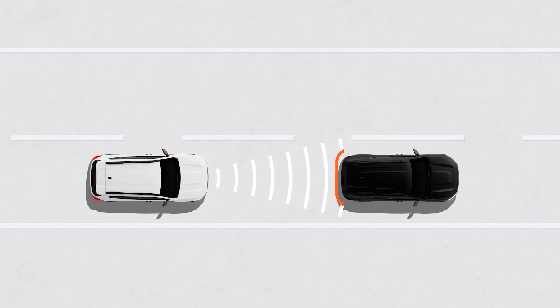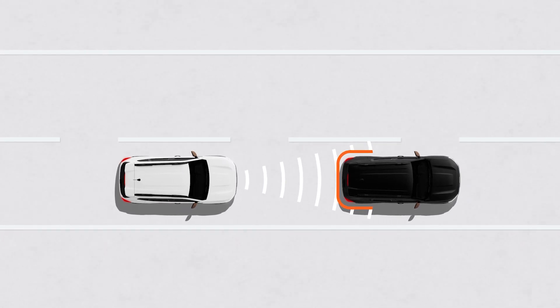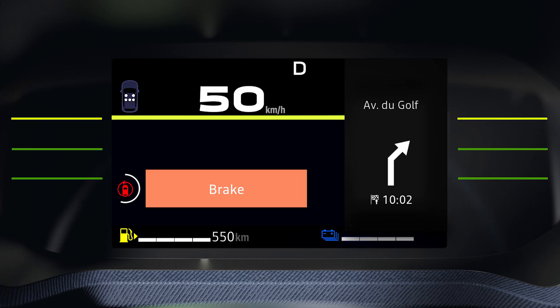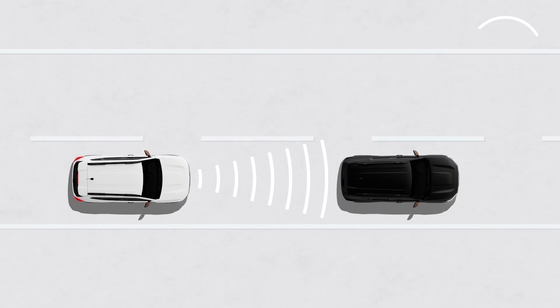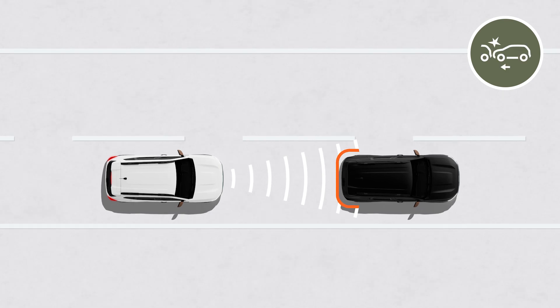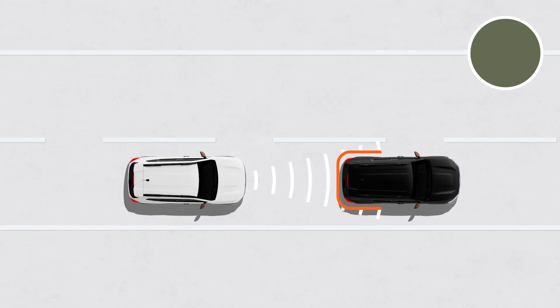If you fail to brake or take evasive action despite the audible and visual warnings, this indicator light and the message 'brake' appear on the instrument panel. Emergency braking is triggered and the vehicle brakes to a complete halt if need be.